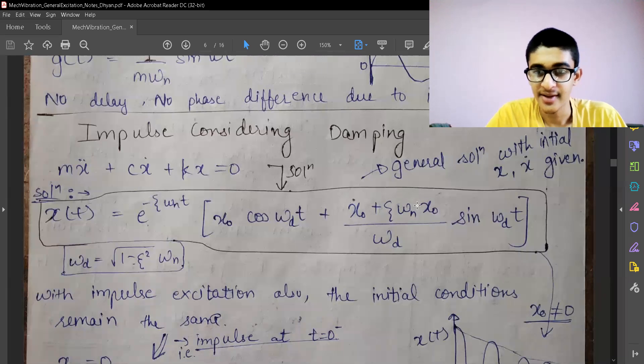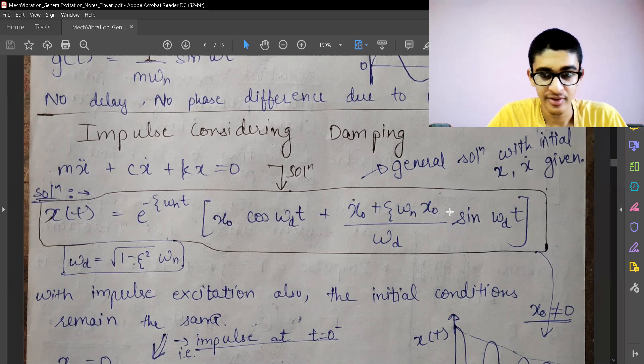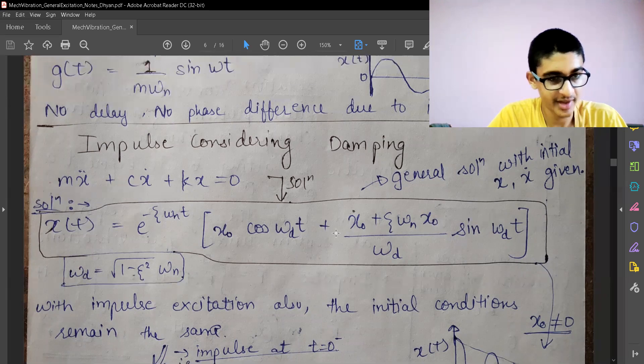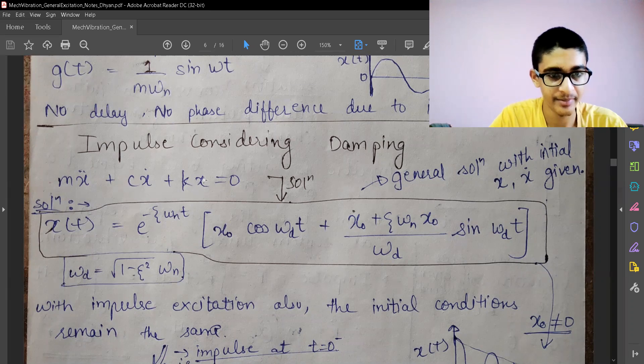This is the general solution or general response for the damping case. The equation of motion has damping, and this is the equation of motion which we have known.